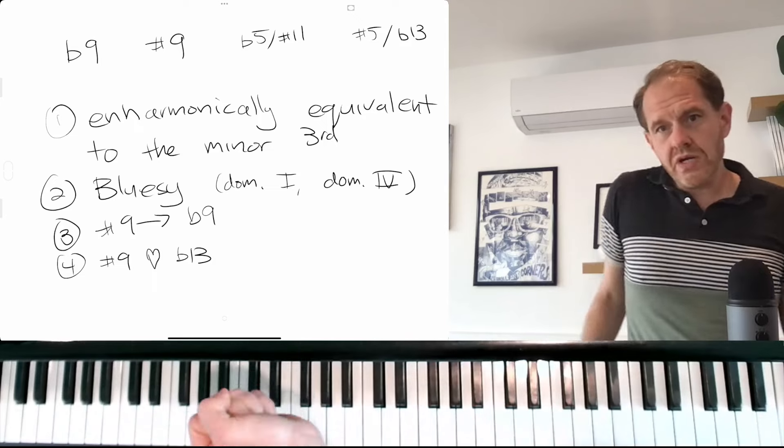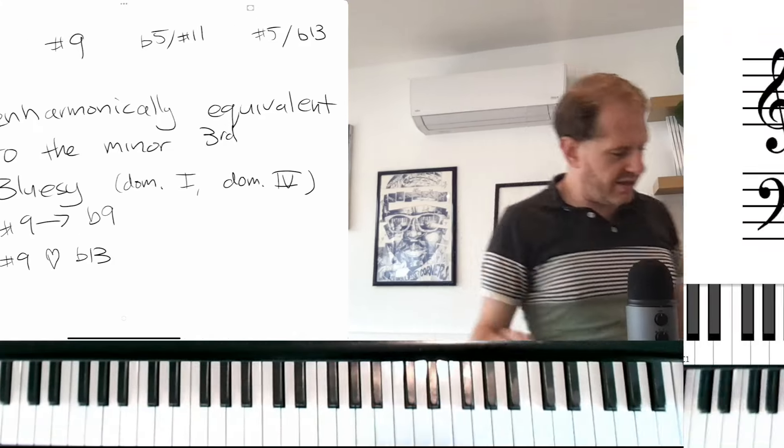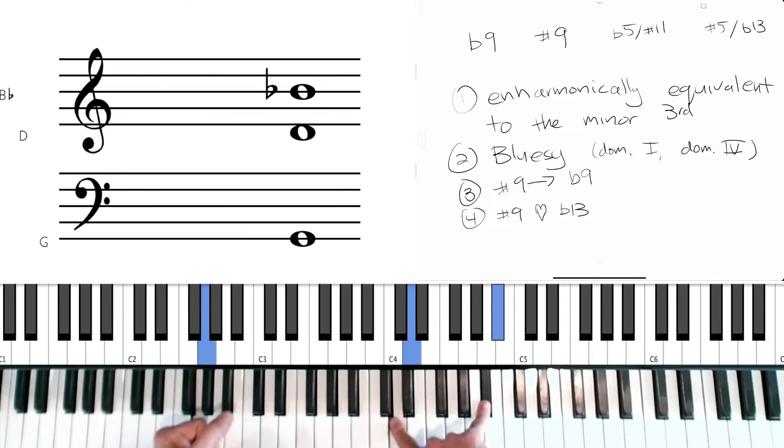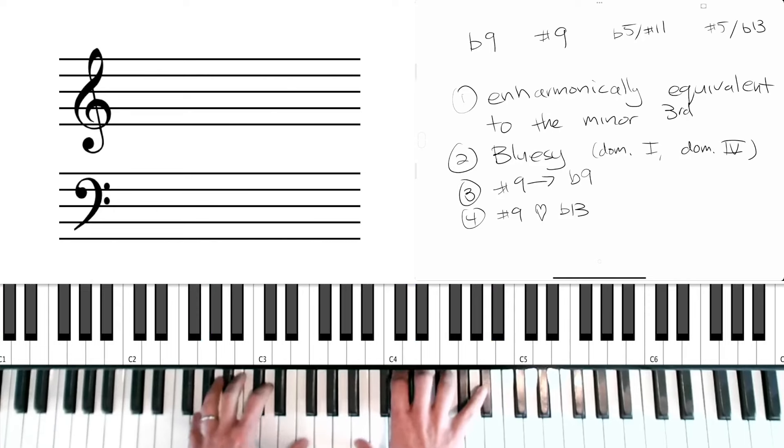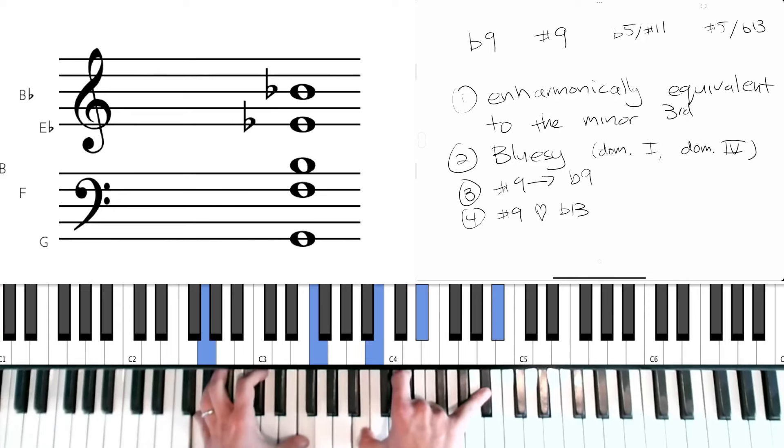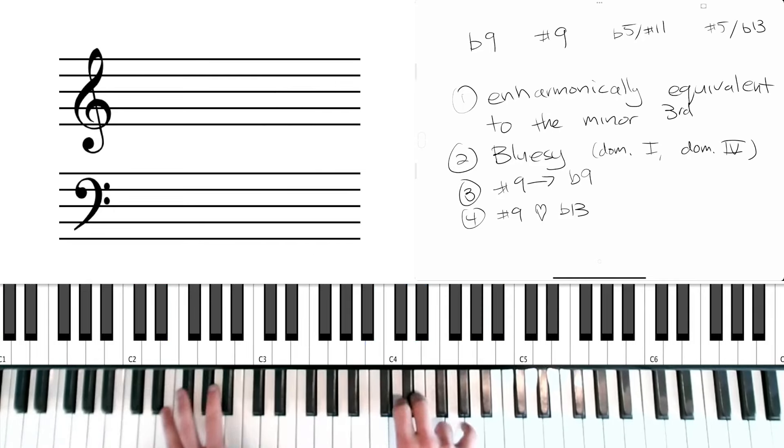And I have a theory about this, which is that the intervals are just awkward between the fifth and the sharp nine because it forms again this minor triad. Whereas if we put the flat 13 in there, there's much less awkwardness.